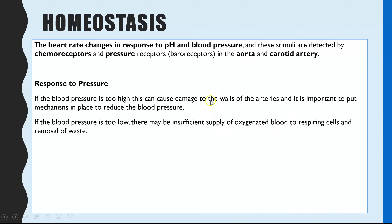Changes in pressure can be due to stress, anxiety, diet, or genetics. If blood pressure is too high it can damage the linings of artery walls, leading to blood clots and potentially heart attack or stroke. If blood pressure is too low there may be insufficient supply of oxygenated blood to respiring cells and insufficient removal of waste products, which could build up toxins.